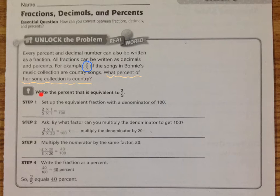Write the percent that is equivalent to 2 fifths. Step 1 is to set up the equivalent fraction with the denominator of 100. Remember, percents and decimals all have to do with 100. And so fractions need to be based out of 100.